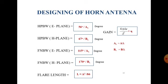The flare length is given by L = a²/(8·delta). The gain of a horn antenna is given by G = (4π · A_e) / lambda², multiplied by eta, where 4π is a constant, A_e is the effective aperture of the horn antenna, lambda is the wavelength, and eta is the efficiency of the horn antenna.